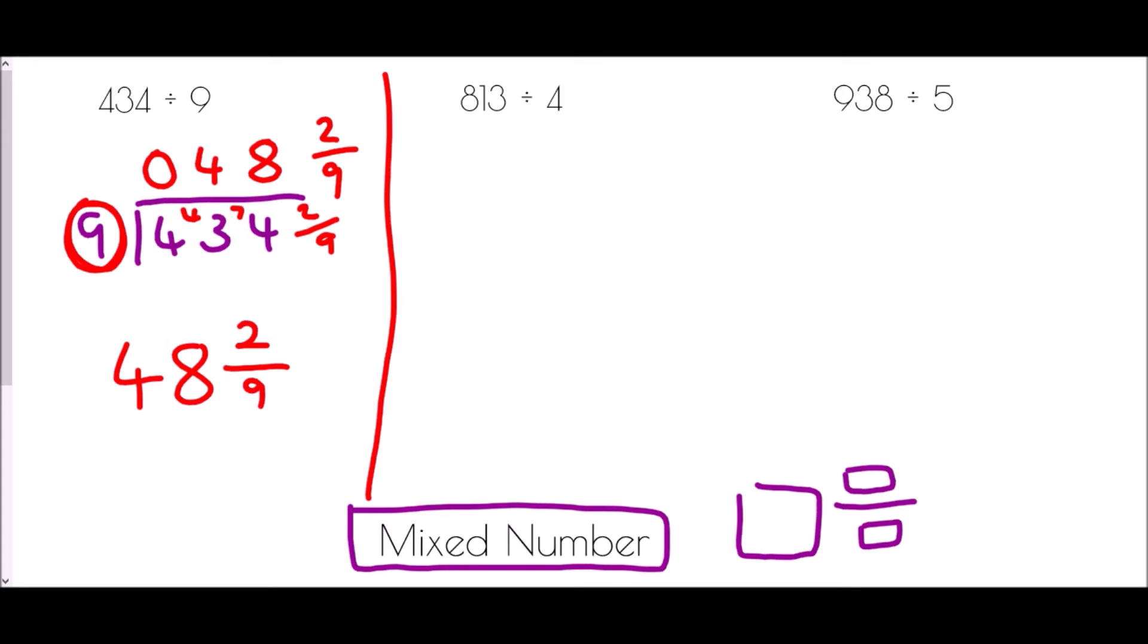813 divided by 4. Well the same situation. I'm just going to write my 813 underneath the bus stop, my 4 on the outside and ask myself how many times does 4 go into 8? It goes in twice. How many times does 4 go into 1? It doesn't. How many times does 4 go into 13? Well 4 goes into 13 three times again with 1 left over. And so my answer is going to be 203, the remainder of 1 over the divisor. So that is 203 and a quarter.